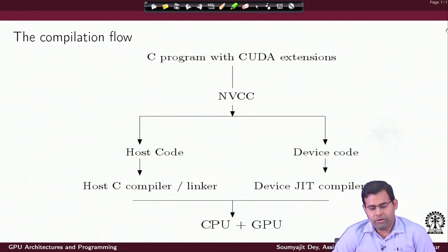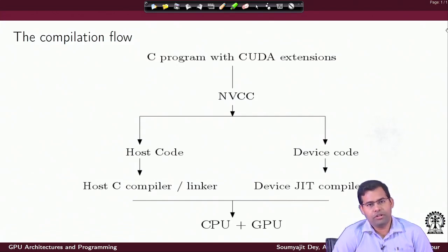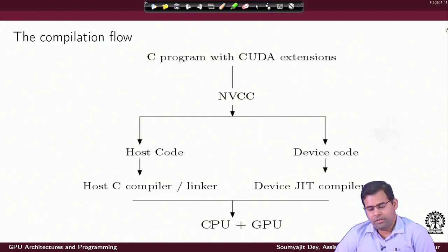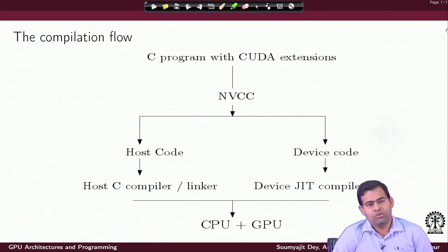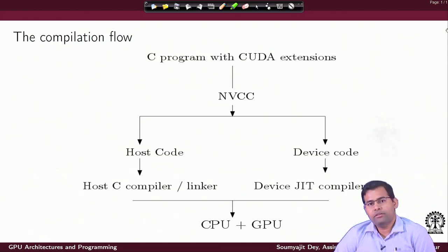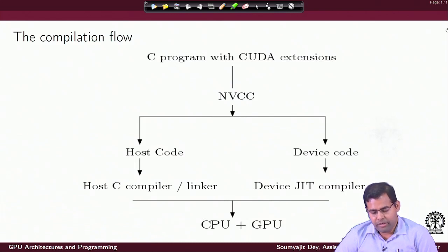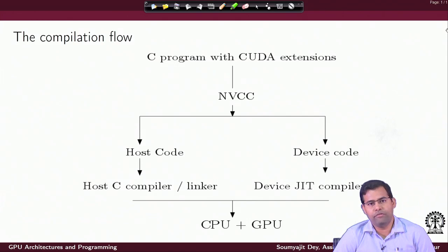The compilation flow for the NVIDIA C compiler is as follows. You write the CUDA program — essentially a C program with CUDA extensions — and compile it with NVCC. What you get is host code and device code. The host code is compiled further by the host C compiler and linker, while the device code will be JIT compiled for execution on the device. These are the two different segments of code: one to execute on the CPU and the other to execute on the GPU.